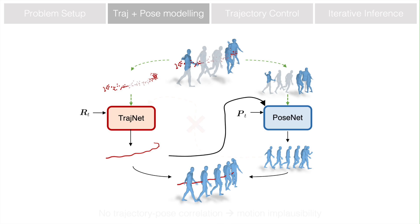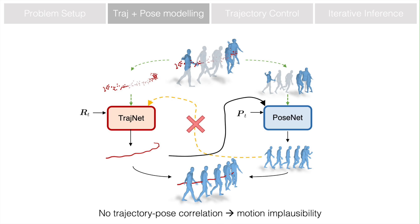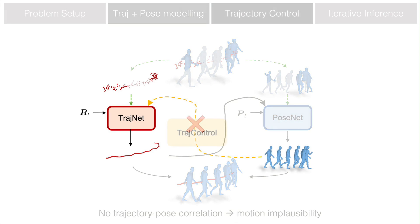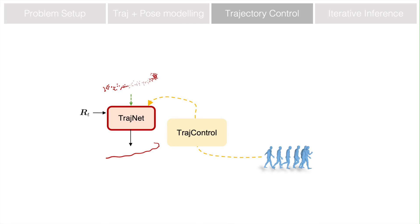However, the trajectory modeling ignores the interdependencies between the trajectory and body pose, causing some implausibility in the output motion, such as foot skating. To address this issue, we propose a flexible conditioning module — trajectory control — to capture the correlations between the trajectory and pose.